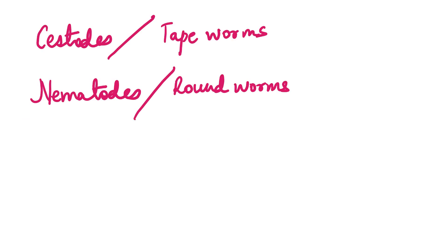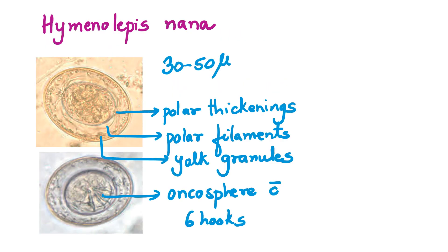Amongst the cestodes, that is the tapeworms, we are going to see the eggs of Hymenolepis nana, Hymenolepis diminuta, Taenia solium, Taenia saginata, and Diphyllobothrium latum. Of course, you're not going to see the eggs of Echinococcus because the eggs are not present in human stool specimens — the eggs of Echinococcus are present in dog feces because the dog is the definitive host. Moving on, we are going to see the eggs of the intestinal nematodes, that is the intestinal roundworms, those found in the large and small intestines. Let's start with the cestode eggs seen in stool specimens, the first of which is the dwarf tapeworm, Hymenolepis nana, the most common cestode infection in humans.